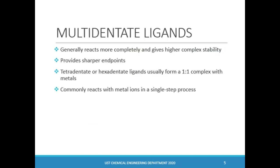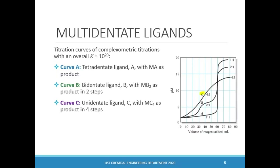We now move our discussion to multi-dentate ligands. In complexometric titrations, it is preferred to use tetra- or hexadentate ligands because they react more completely and form more stable complexes with metals. They provide sharper endpoints, mainly due to their capacity to form one-to-one complexes with metals in a single-step process. This compares the titration curves of complexometric reactions using a unidentate, bidentate, and a tetradentate ligand.